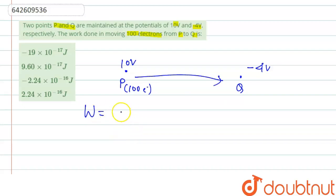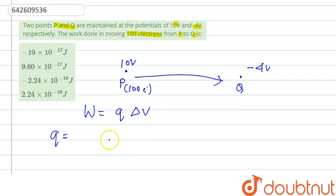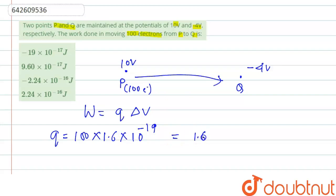Work done is directly proportional to the amount of charge moved and the change in potential, that is potential difference. So here we have to find out the charge. The charge of one electron is 1.6 into 10 to the power minus 19 coulomb. So for 100 electrons it will be multiplied by 100, giving us 1.6 into 10 to the power minus 17 coulomb.